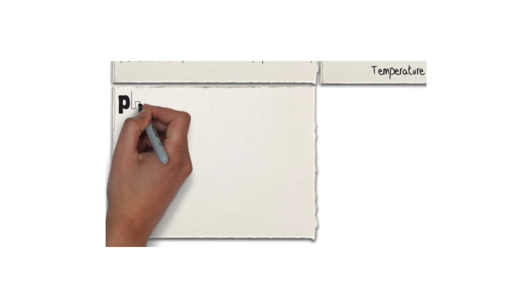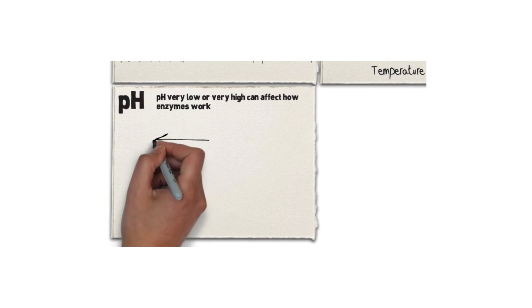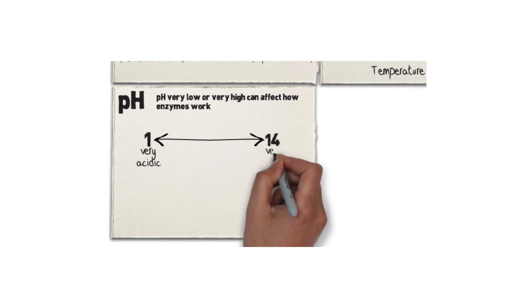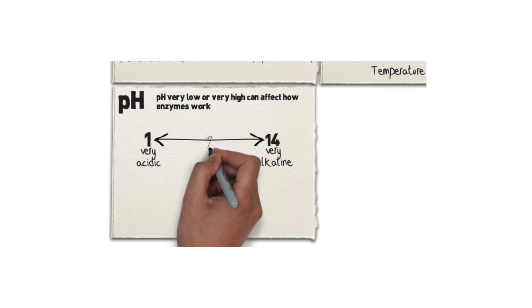Another factor that can affect enzymatic activity is pH. pH very low or very high, in other words very acidic or very alkaline, affects enzymatic activity by chemically denaturing enzymes.